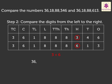Therefore, 36,18,88,346 is less than 36,18,88,613.